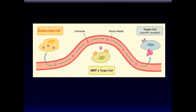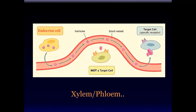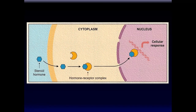In plants, of course, there's no blood — thank God, otherwise every lawn-mowing session would be a blood bath. In plants, hormones travel via the vascular system or by diffusion from cell to cell. Once they reach their target, the hormone can affect the cell in different ways.